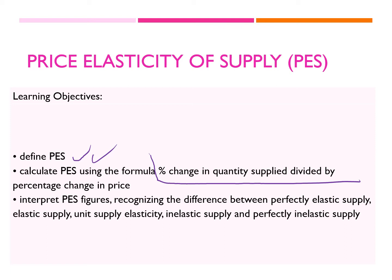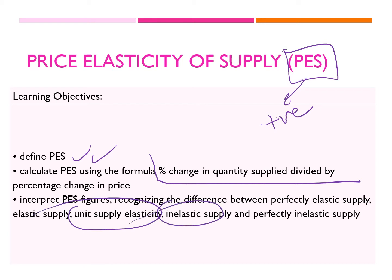This formula is very similar to that of price elasticity of demand, but the key difference is that whenever I am calculating PES, I would be expecting a positive answer, unlike price elasticity of demand. We will also be interpreting the figures, but in this video we will only be talking about unit supply elasticity, inelastic supply, and elastic supply. The other special curves will be explained in another video.